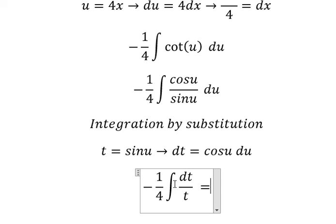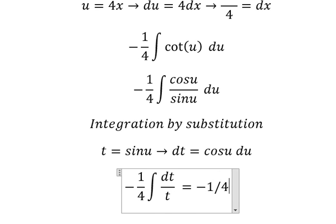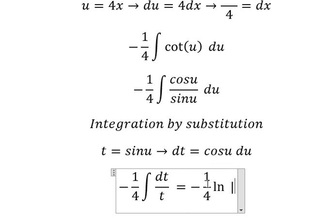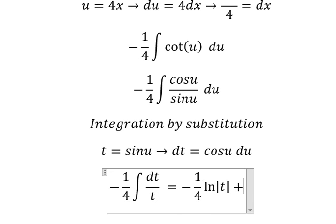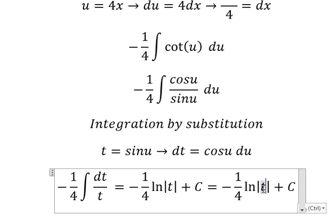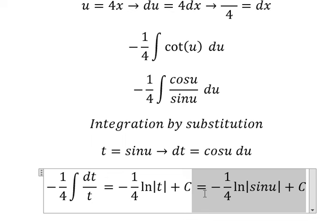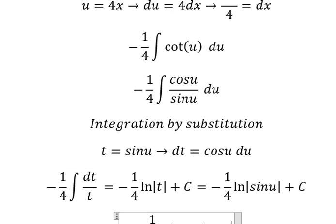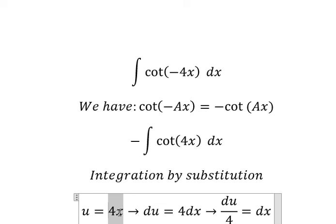The integral of this gives us -1/4 ln of the absolute value of t plus C. Now t is sin u, so we have -1/4 ln|sin u| + C. And u is 4x, so the final answer is -1/4 ln|sin(4x)| + C.